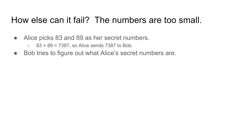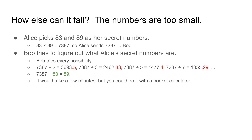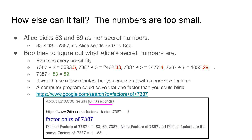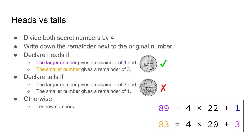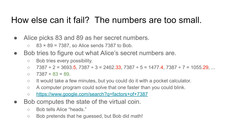This time Bob's not going to guess — he's going to figure out what the secret numbers are. Bob is looking for two integers that multiply together to make seven thousand three hundred eighty seven, so he starts from two and keeps trying until he gets to eighty-three. In just a few minutes he found the secret numbers. At this point Bob has the two secret numbers, so he can easily compute the result of the coin flip. Bob won the coin toss because Bob knows math.